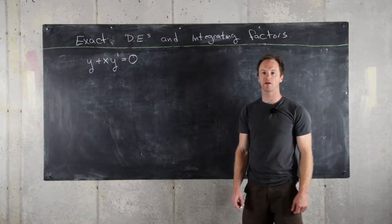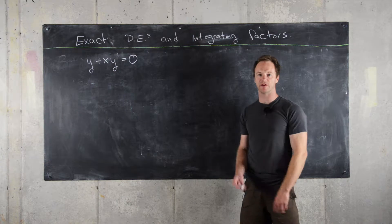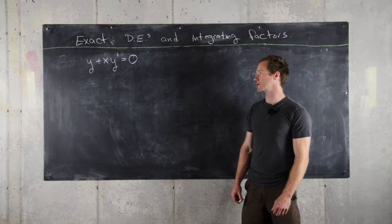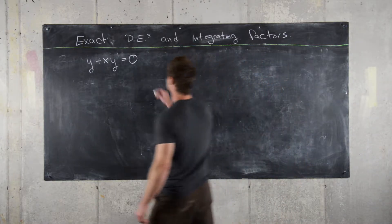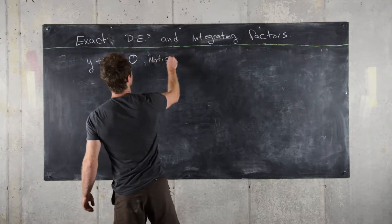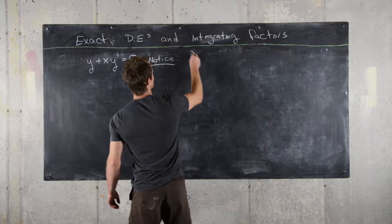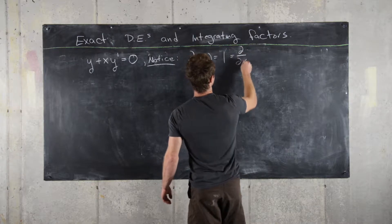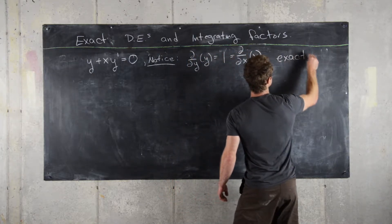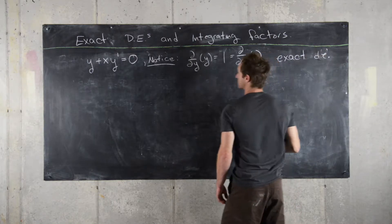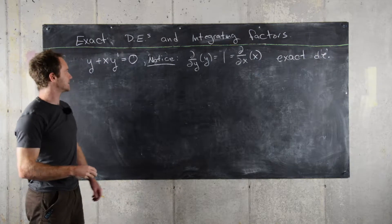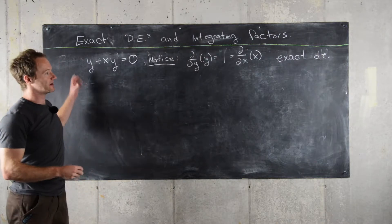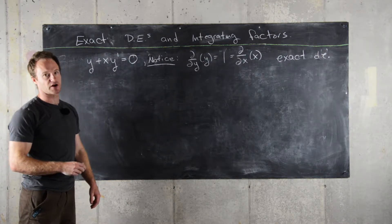In this video we're going to start off by looking at a differential equation, examining some invariance property of it, and use that fact to solve a related differential equation. First, notice that the derivative with respect to y of y equals 1, and that's also the derivative with respect to x of x. In other words, this is an exact differential equation — though it's also separable and solvable by first-order linear methods.